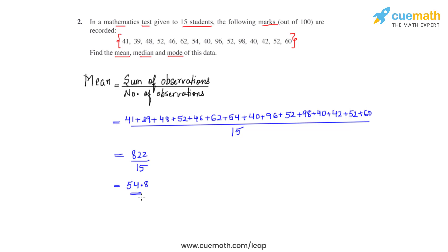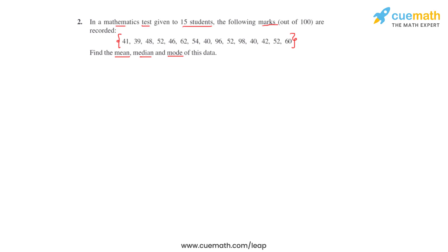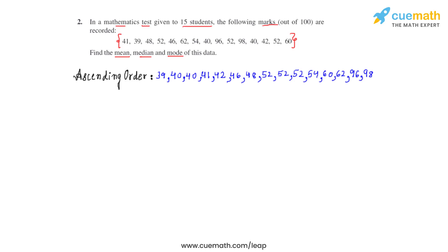Now our next step is to find the median. To find the median of the given data we will have to arrange this data first in either ascending or descending order. So we will arrange the given data in ascending order. Now we will have to find the middle most value in this given data, and as the number of observations is 15, we use the formula given on the screen.